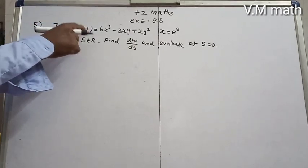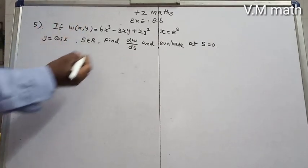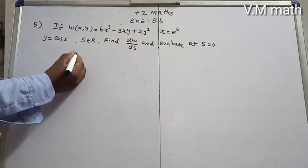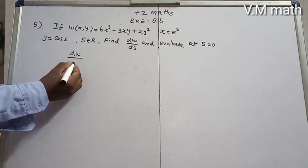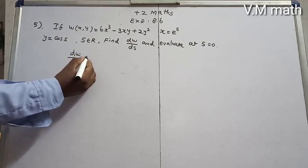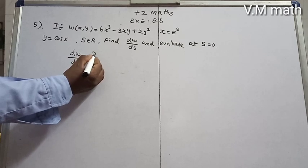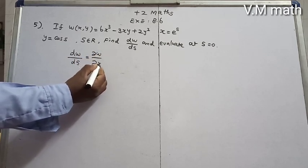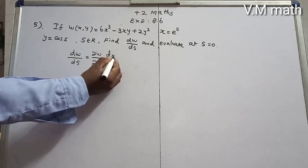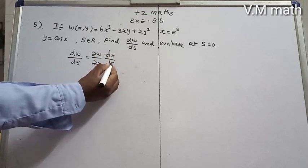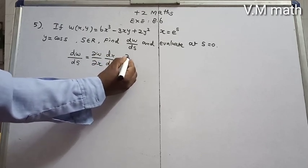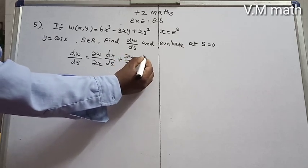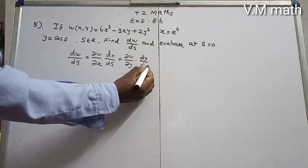So, since w is a function of x and y variables, we can use the chain rule formula: dw/ds = (∂w/∂x)(dx/ds) + (∂w/∂y)(dy/ds).